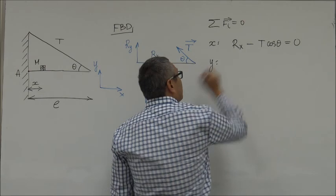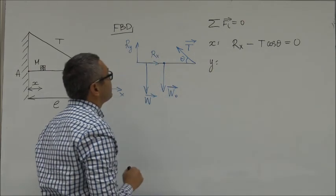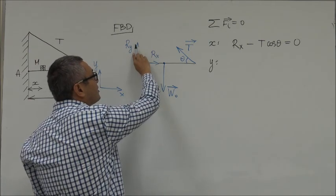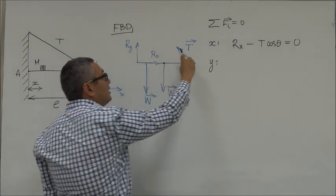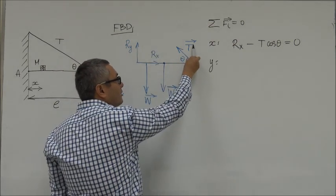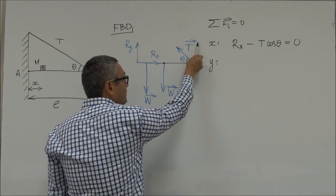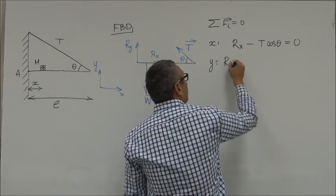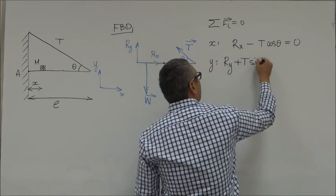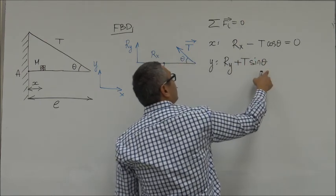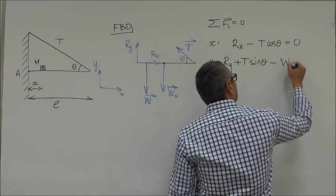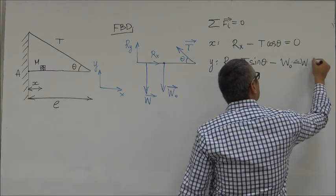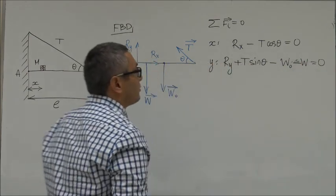Now let's write the condition for the Y component. In the Y direction we have R-Y pointing upward in the positive direction. The Y component of T is also pointing in the positive direction. W-zero and W are both pointing in the negative direction. So we have: R-Y plus T sine theta minus W-zero minus W equals zero.